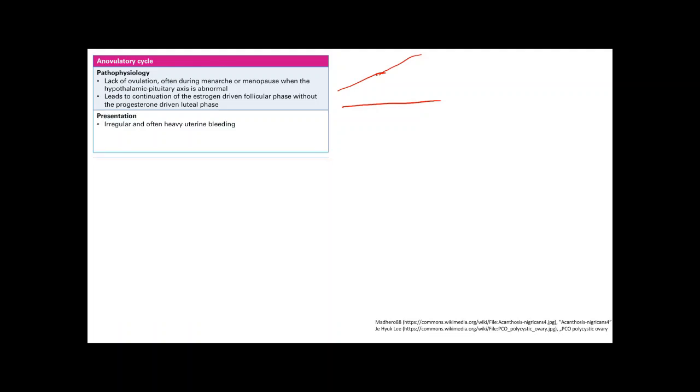And so what happens is you're going to get irregular bleeding. Because eventually your hyperplasia is going to outgrow the blood supply. So you get ischemia. And then there's sloughing. So that leads to irregular bleeding. And often can be heavy because, as you can see, there's a lot more glands to bleed out now.